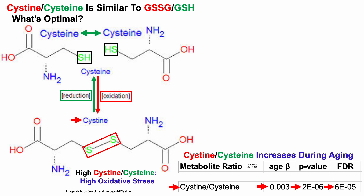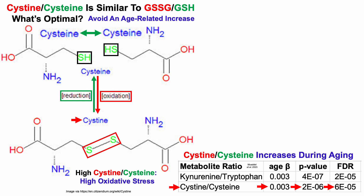This is a significant association: the p-value and false discovery rate (FDR) are both below 0.05. So in terms of what's optimal for this ratio — cystine divided by cysteine — the goal should be to avoid an age-related increase. Also associated with age in this paper was the kynurenine to tryptophan ratio, which may be familiar as it's part of the de novo NAD synthesis pathway.